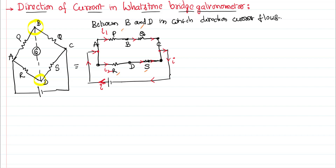P and Q are in series, whose effective resistance is P plus Q. R and S are in series, whose effective resistance is R plus S. The upper and lower combinations of resistors are in parallel. So the equivalent resistance of the circuit — as discussed in the previous video — is: the upper part P plus Q is in parallel with the lower part R plus S. When resistors are in parallel, the formula is R₁R₂ divided by R₁ plus R₂.